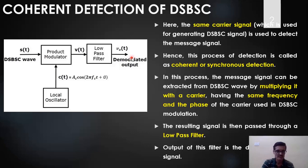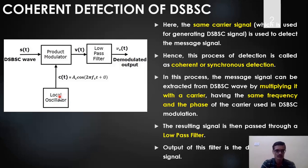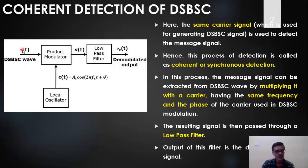Now, how exactly do we demodulate the signal and get back the original message signal? We have a product modulator followed by a low pass filter, and one local oscillator used to generate the carrier locally. The input to this product modulator or multiplier is the double sideband suppressed carrier wave s(t), which is multiplied with c(t) to get v(t).